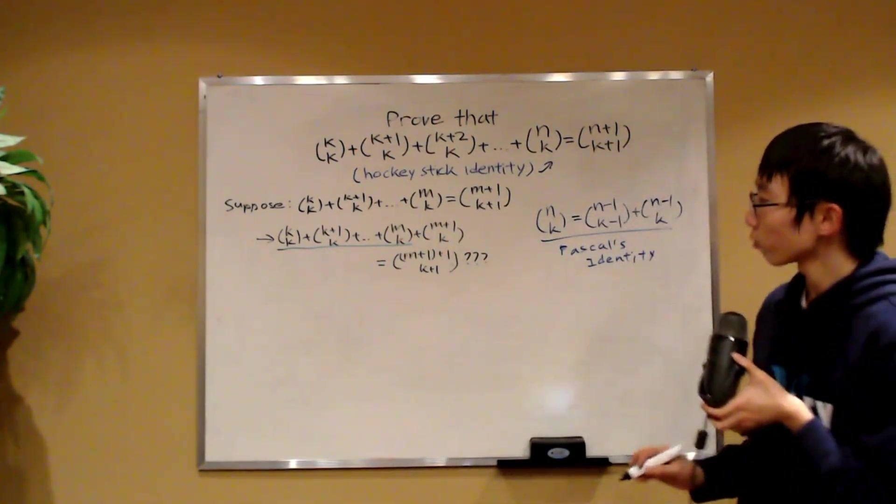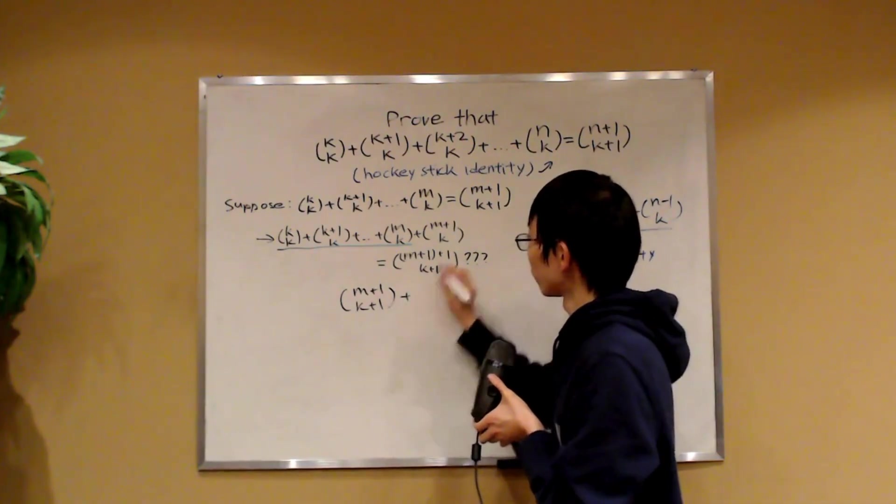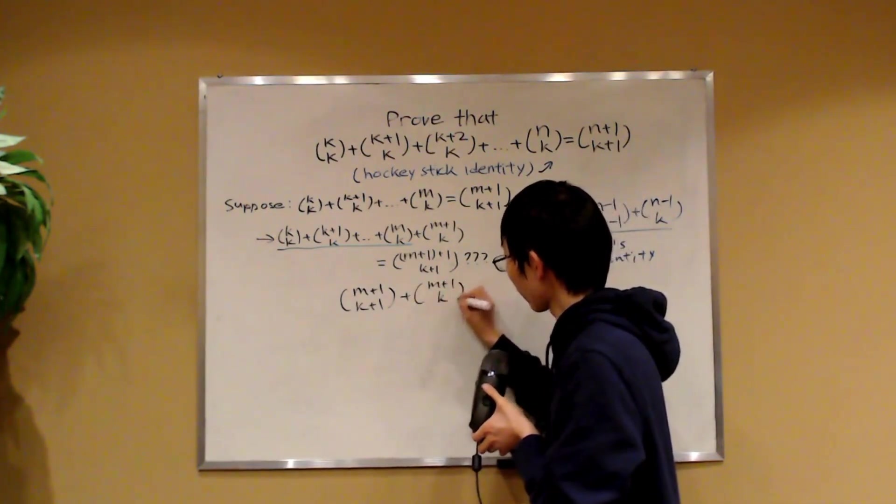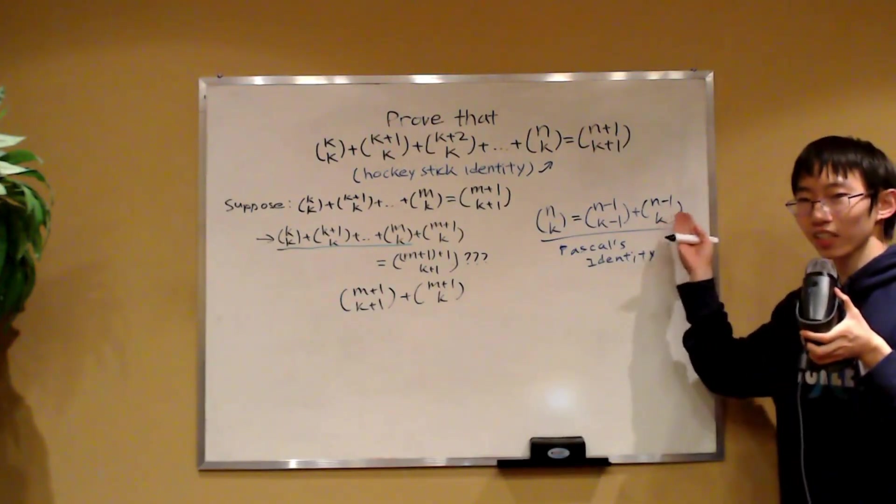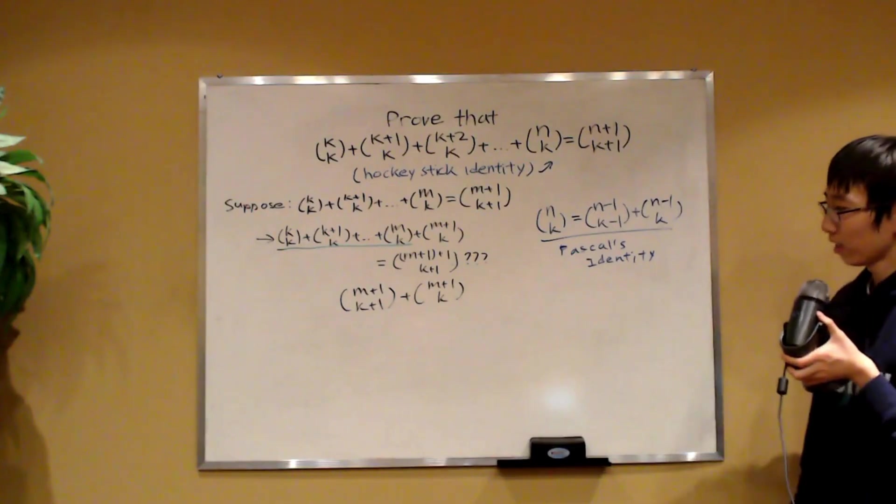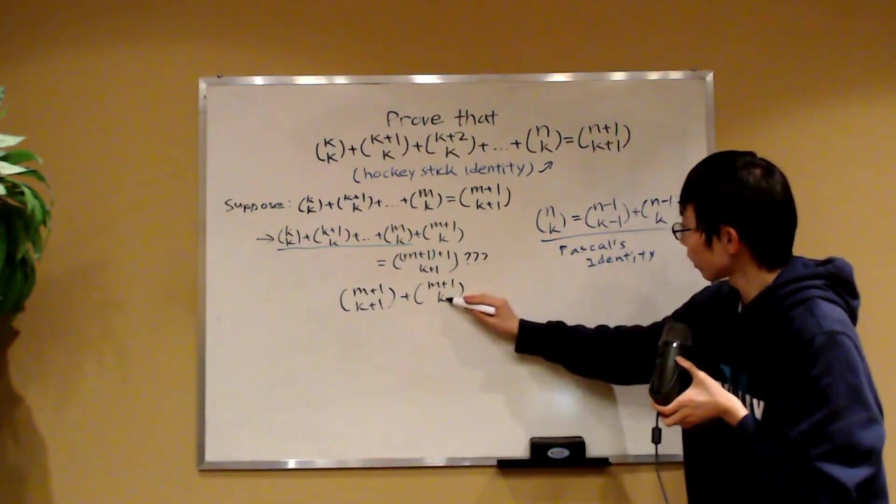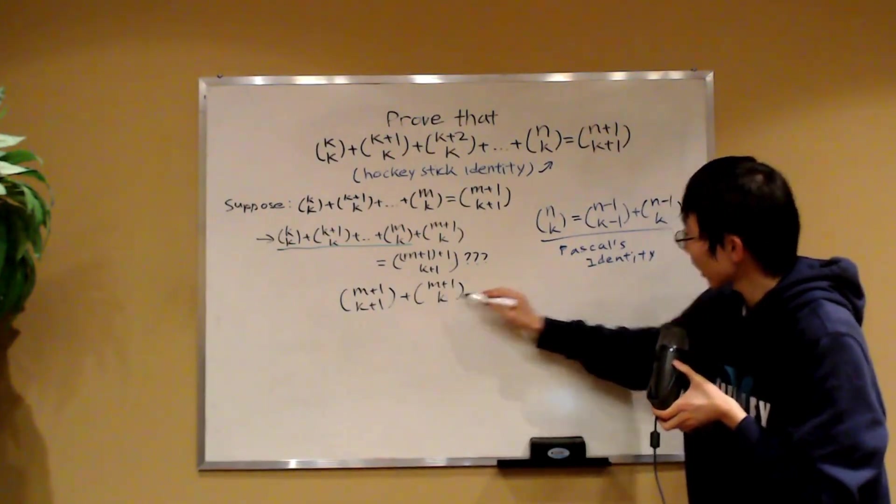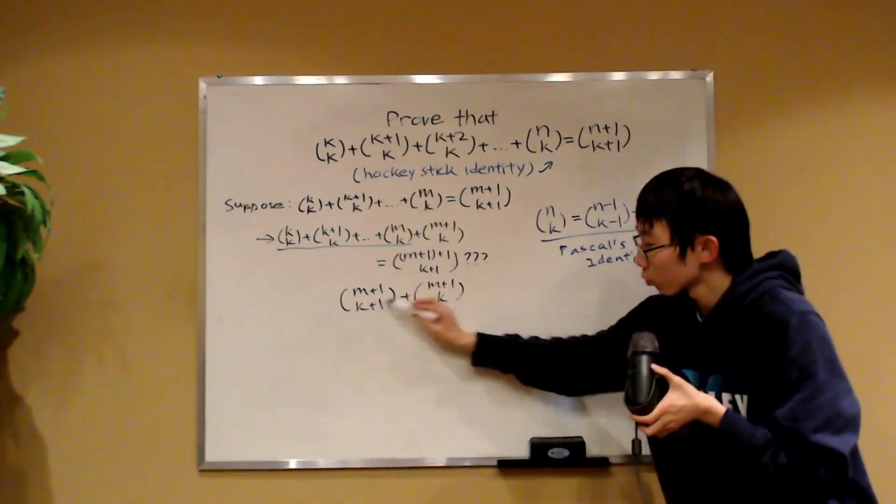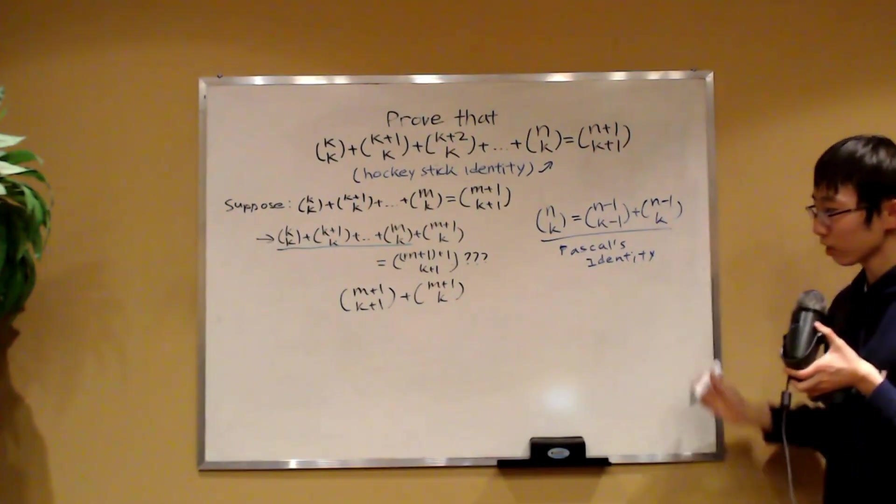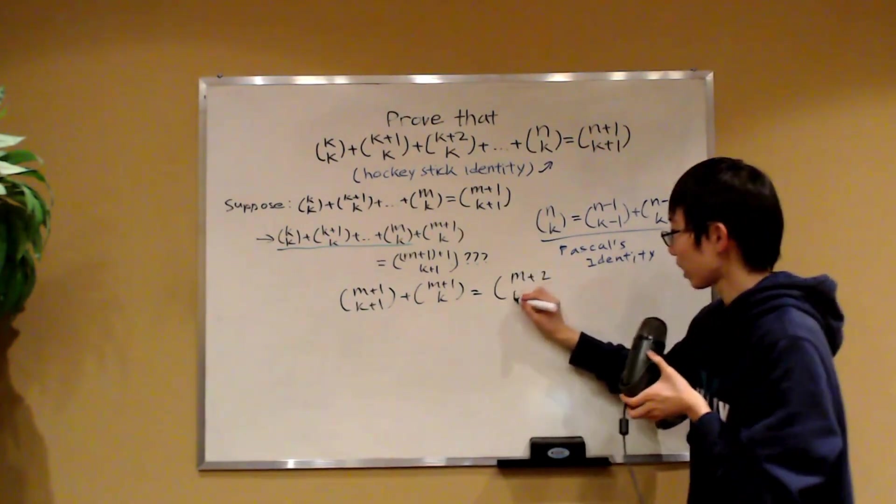So we can actually replace this entire sum before the m plus 1 choose k. We can replace that with the formula. So that would be m plus 1 choose k plus 1, and then here we have plus m plus 1 choose k. Now is this sum equal to this? Well, look at this. Pascal's identity. It's finally coming into play. Notice that the m plus 1s, they're the n minus 1s over here. And this k is this, and this k over here is actually this k minus 1 because this k plus 1 is this k. It's one more because this is one more than this. So by Pascal's identity, this just evaluates to m plus 2 choose k plus 1.